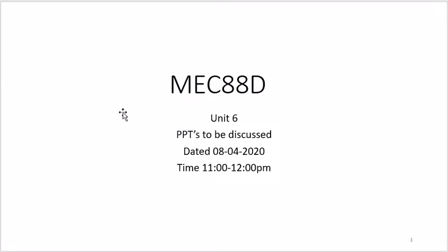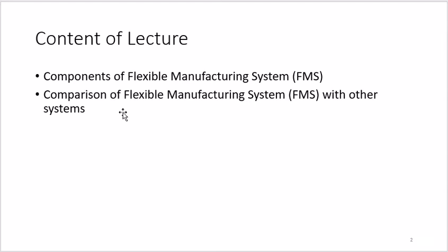Hello friends and welcome back. This video lecture is part of your continuous series on CNC machines and automation. Today's topics are the components of flexible manufacturing systems and a comparison of flexible manufacturing systems with other systems. In the last class we started about FMS, checked where we can implement it, its advantages, and its types.